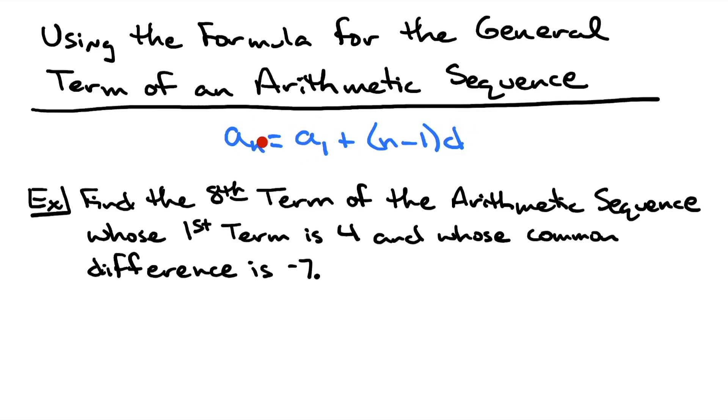A sub n will be the term you're looking for, and n will be, if you're looking for the eighth term, it will be 8. So in this example, it says find the eighth term of an arithmetic sequence.